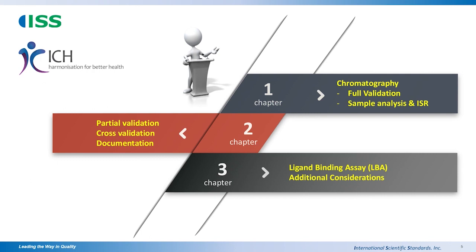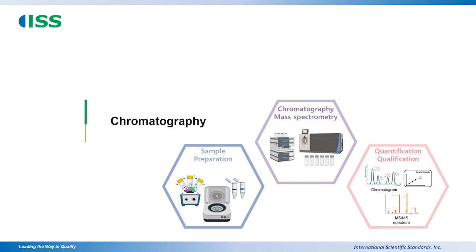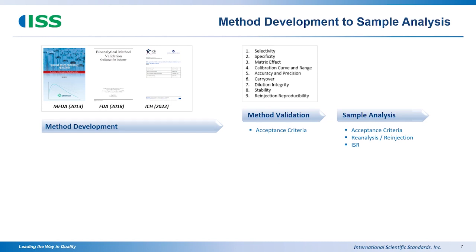ICH M10 is quite a bulky guideline. I categorized my content into three areas: the first covers chromatography and documentation in chapter nine, the second covers partial validation and cross-validation, and LBA may not be fully explained today due to time constraints. Let me talk about chromatography first.